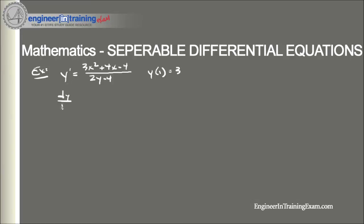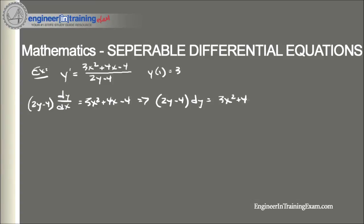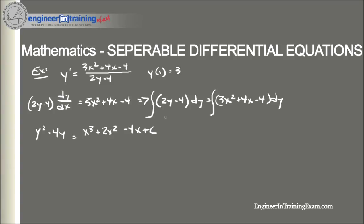We multiply through by (2y − 4), and note that y' is dy/dx, so multiplying through by dx we get: (2y − 4) dy = (3x² + 4x − 4) dx. Now we integrate both sides and find: y² − 4y = x³ + 2x² − 4x + C.